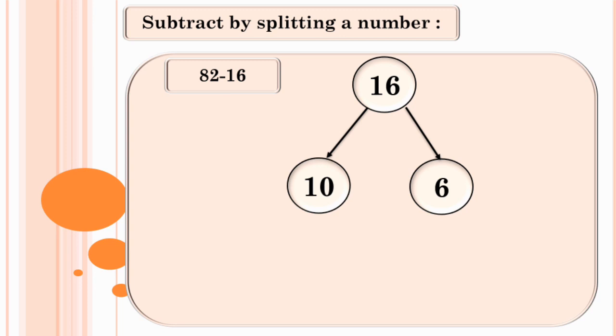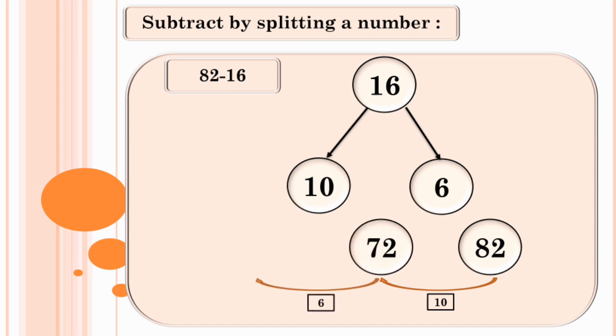These are the two parts. Let's start our subtraction now. 82 minus 10 equals 72. In the next step, 72 minus 6 equals 66. So, 82 minus 16 equals 66.